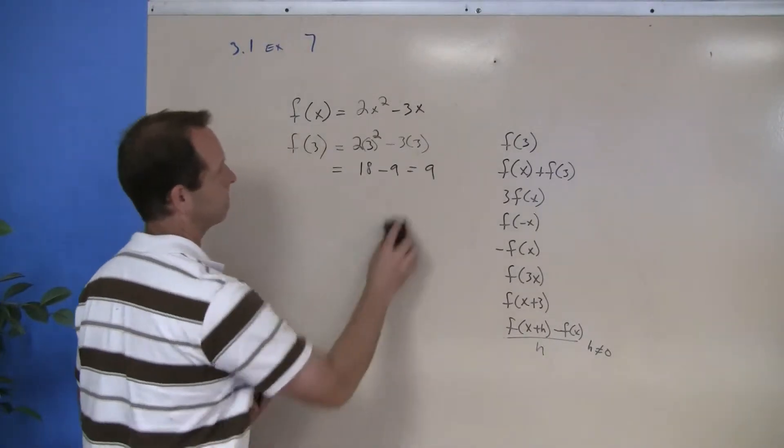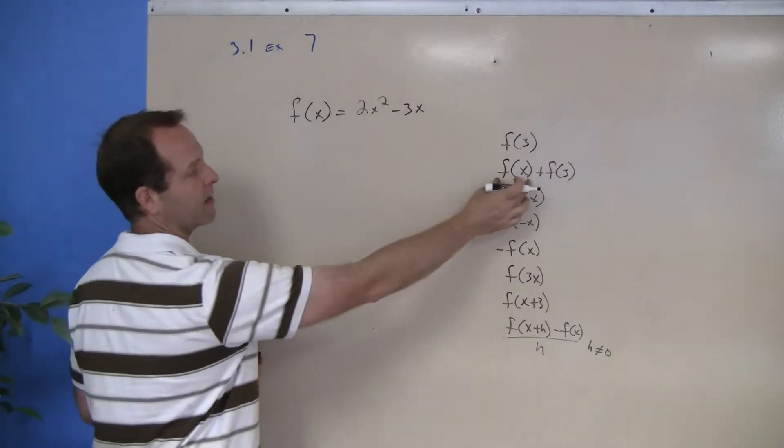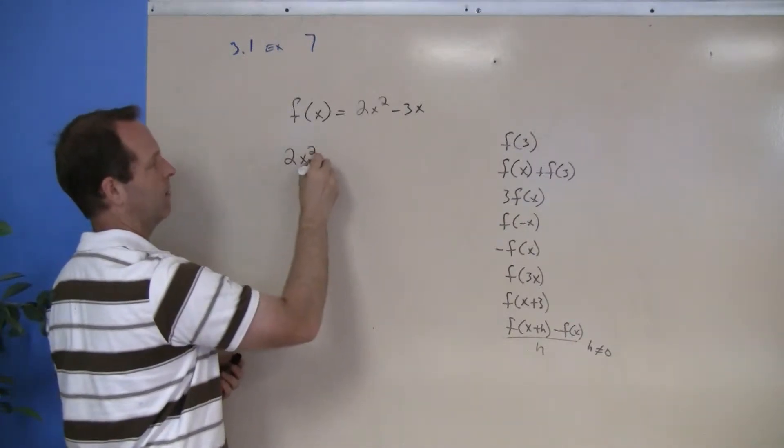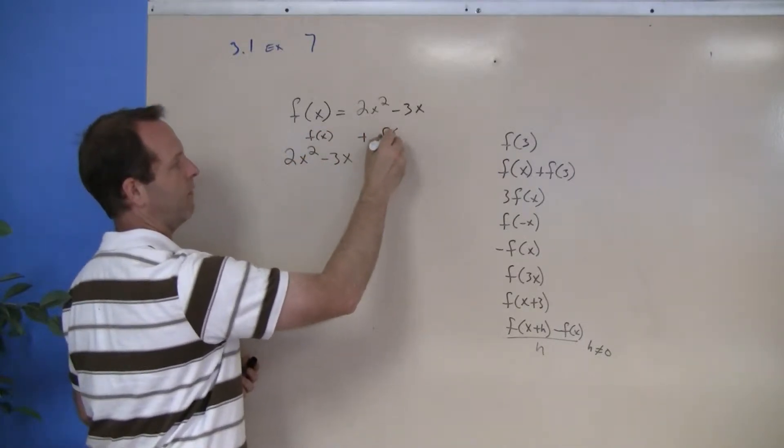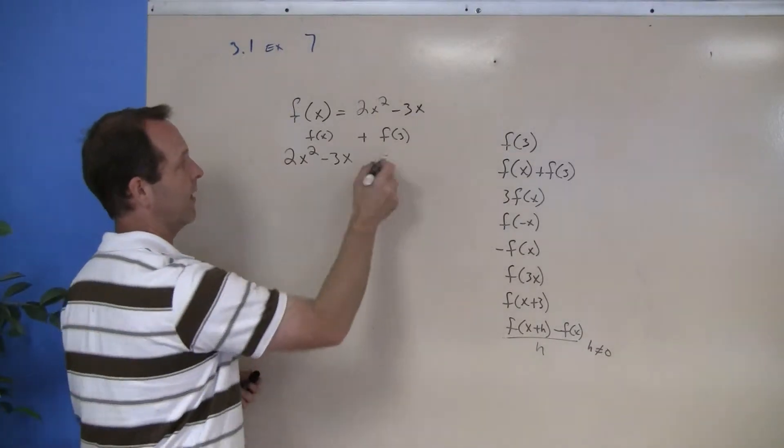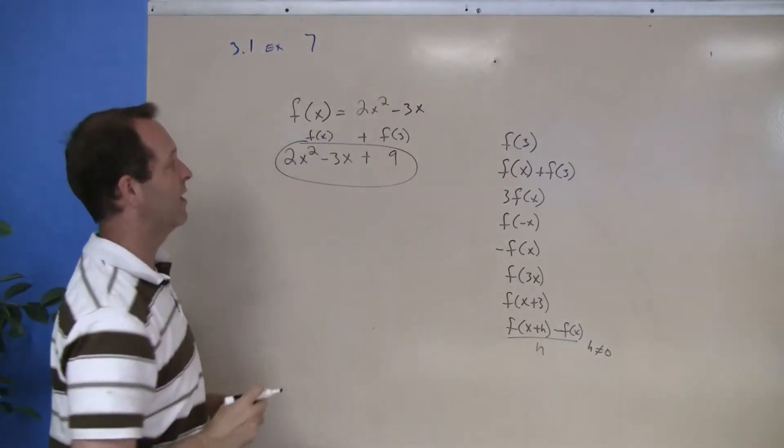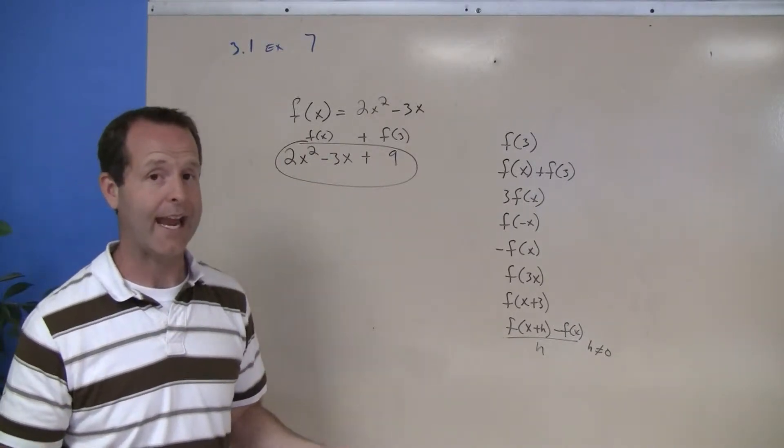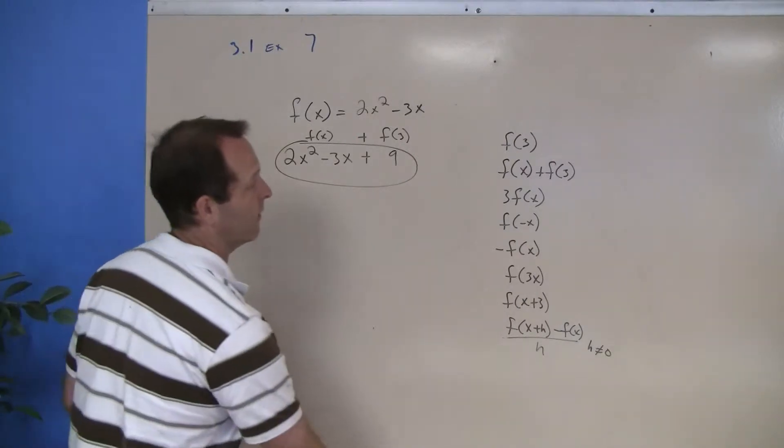Let's look at the next one. f(x) plus f(3). Well, f(x) already is here, so that becomes 2x squared minus 3x. That's my f(x). Plus f(3), and we already evaluated the function at 3, and that became a plus 9. So there is f(x) plus f(3): 2x squared minus 3x plus 9. I can't reduce that any further because there's no like terms.